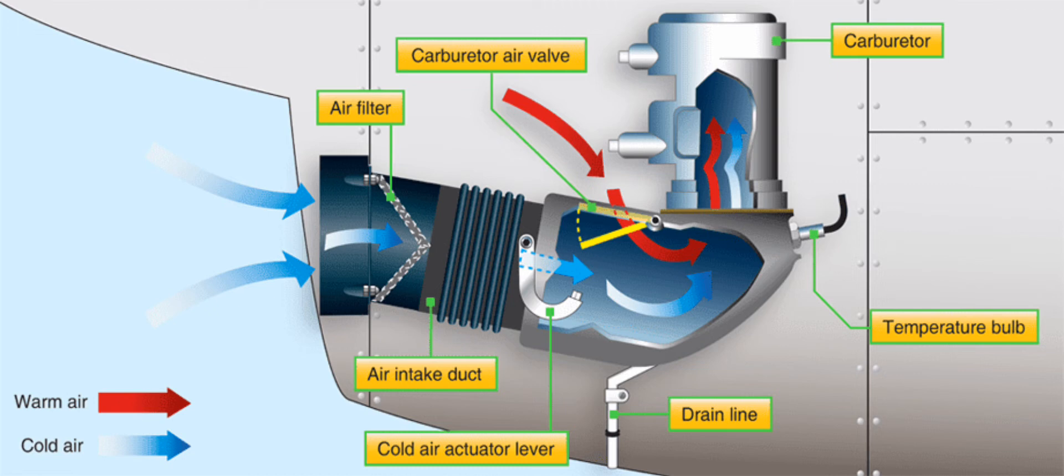Carburetor throttle ice is most likely to form when the throttle is in which position? Partially closed.